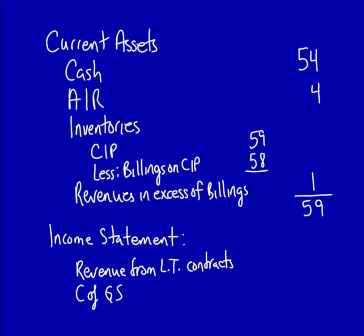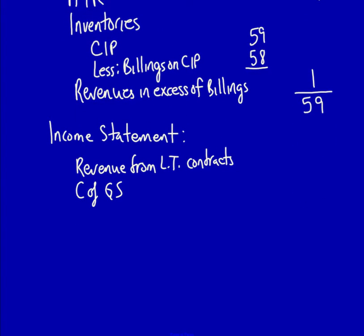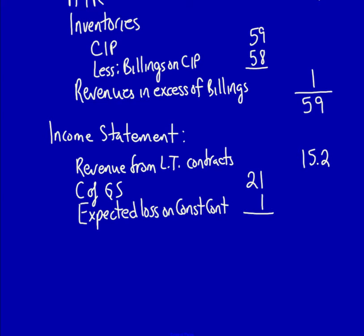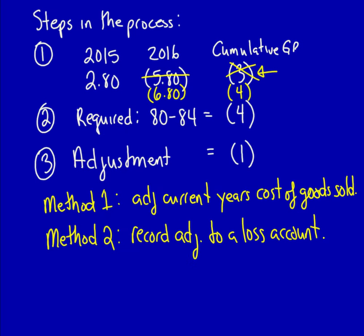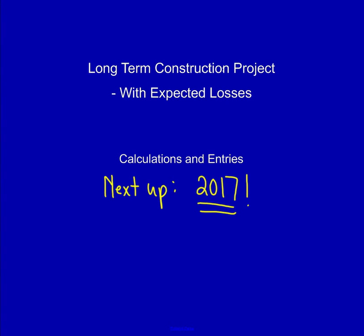It's the income statement that looks different under Method 2. Revenue from the long-term contract: $15.20. Cost of goods sold: $21. Expected loss on construction contract: $1. Total costs: $22. Gross profit or loss: $6.80. The additional $1 adjustment goes into a separate expense account noted underneath cost of goods sold. Which method is better — Method 1 or Method 2? That decision is left to the accountant and their professional judgment. Both methods are totally acceptable. In the next video, we'll be looking at 2017.